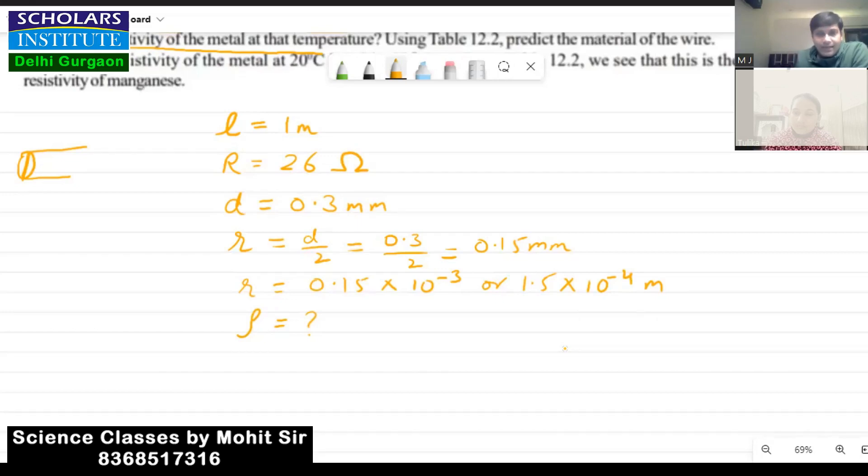Now what we do here is that first we will find the area of cross section, because to use in the formula which is required for solving this question we need to have area first. So area is pi r square.